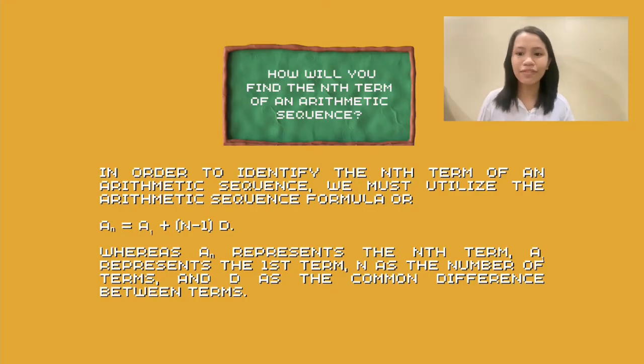How will you find the nth term of arithmetic sequence? In order to identify the nth term of arithmetic sequence, we must utilize the arithmetic sequence formula: a_n = a_1 + (n - 1)d, whereas a_n represents the nth term, a_1 represents the first term, n as the number of terms, and d as the common difference between terms.